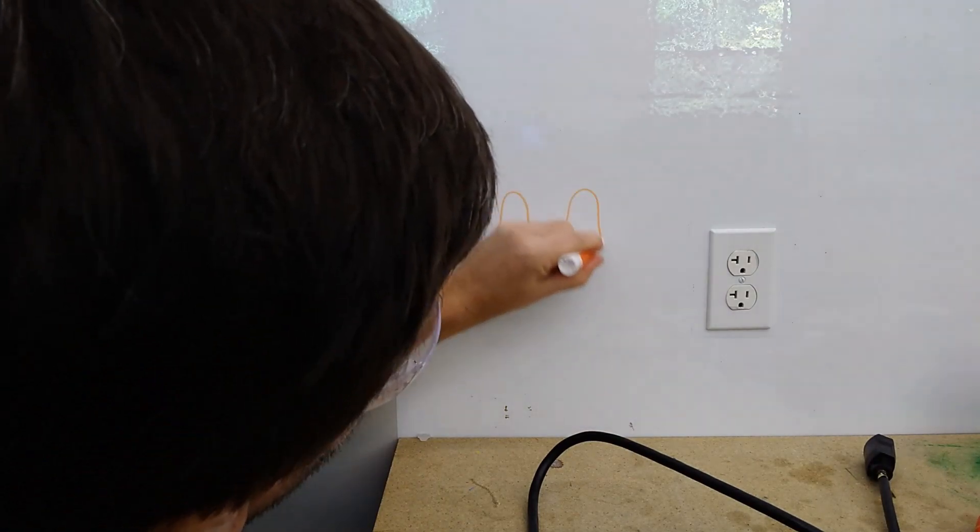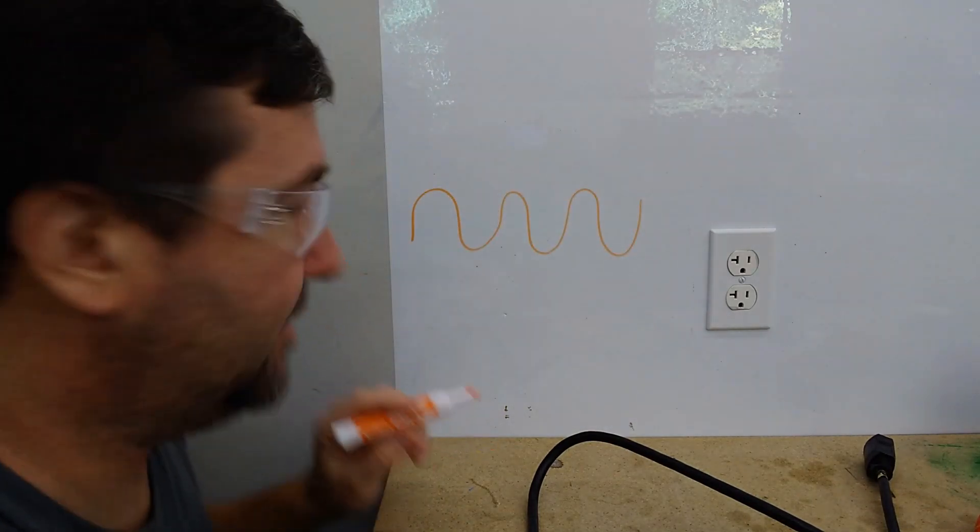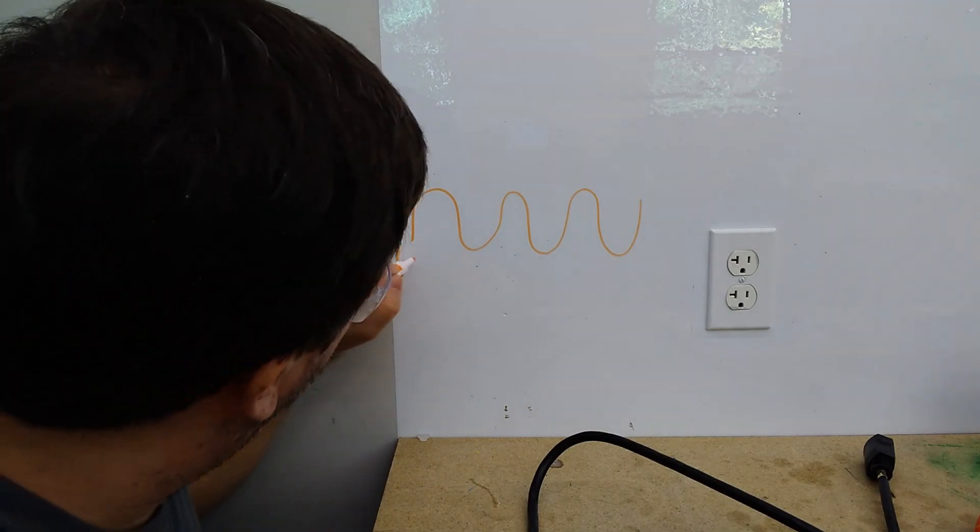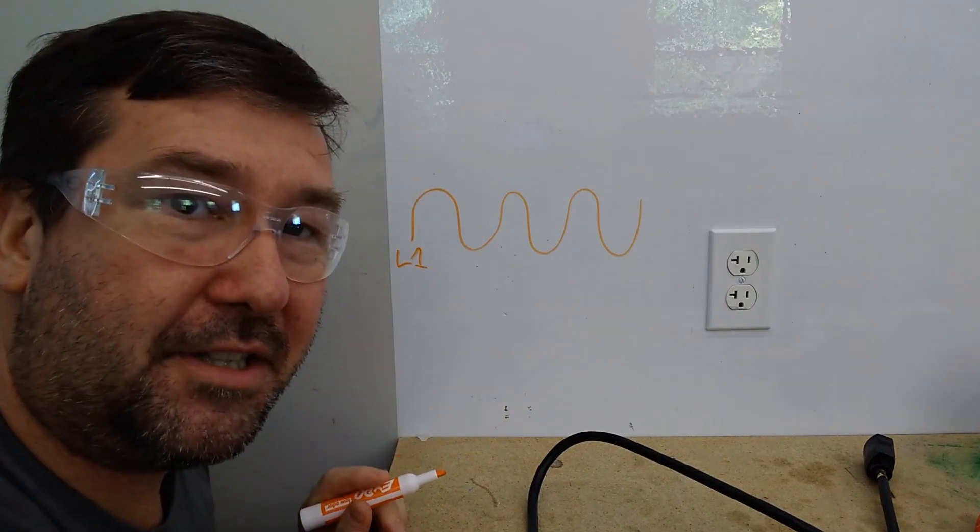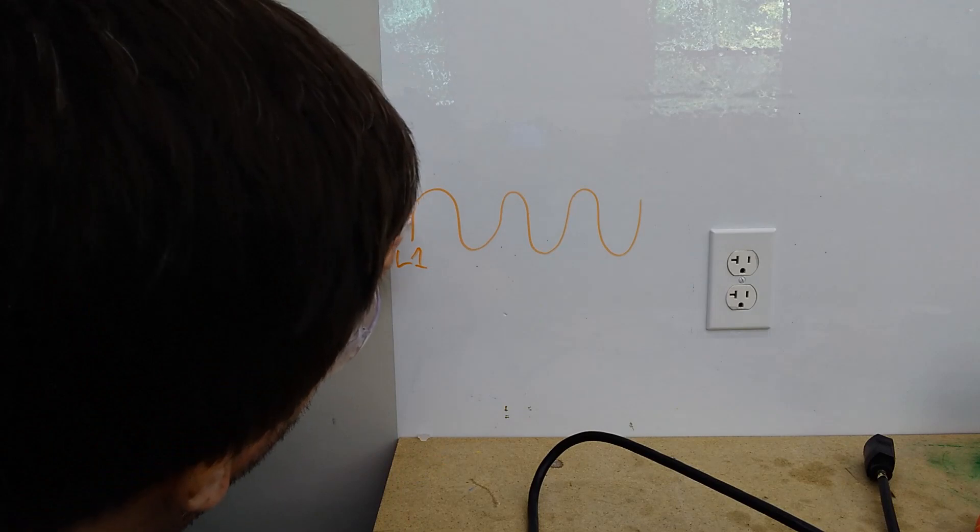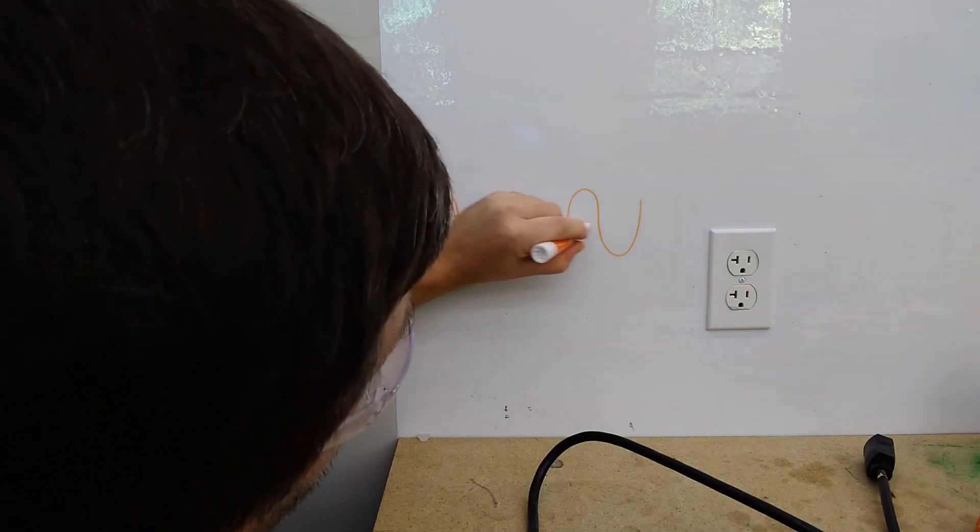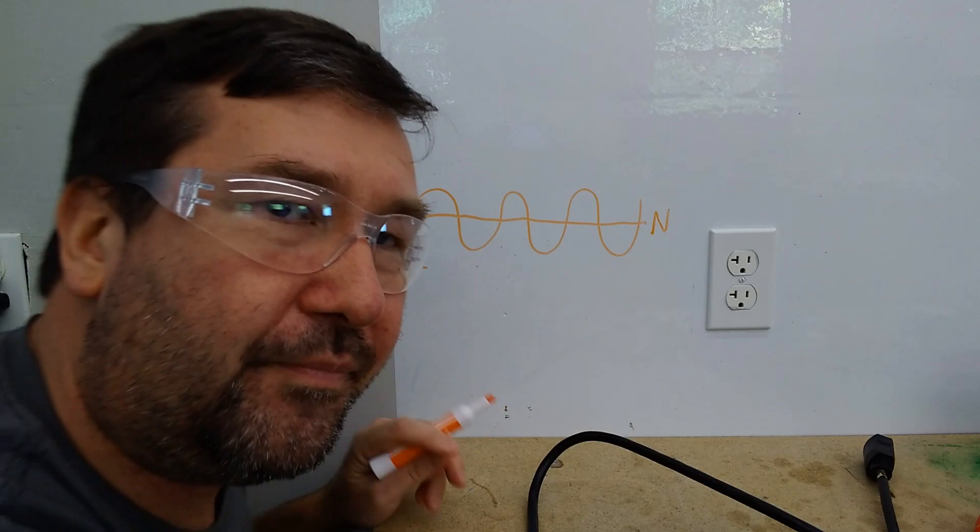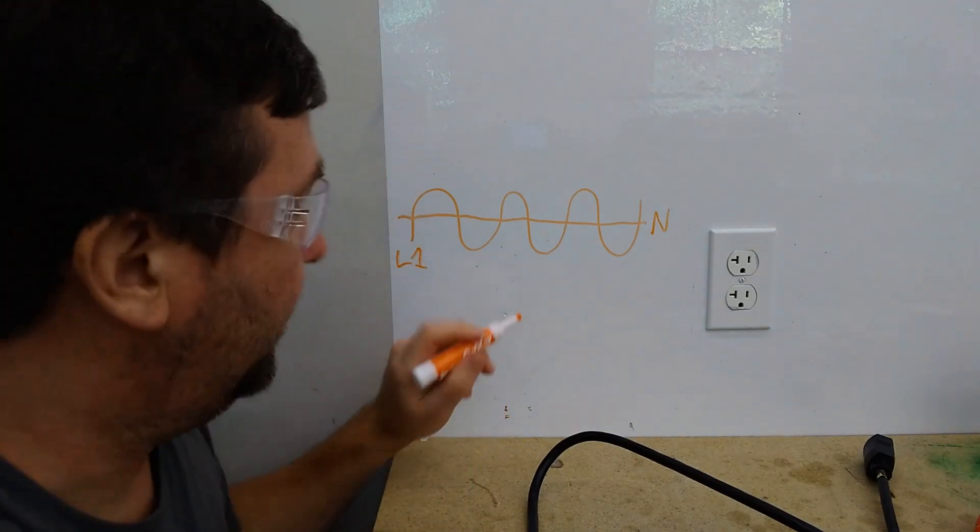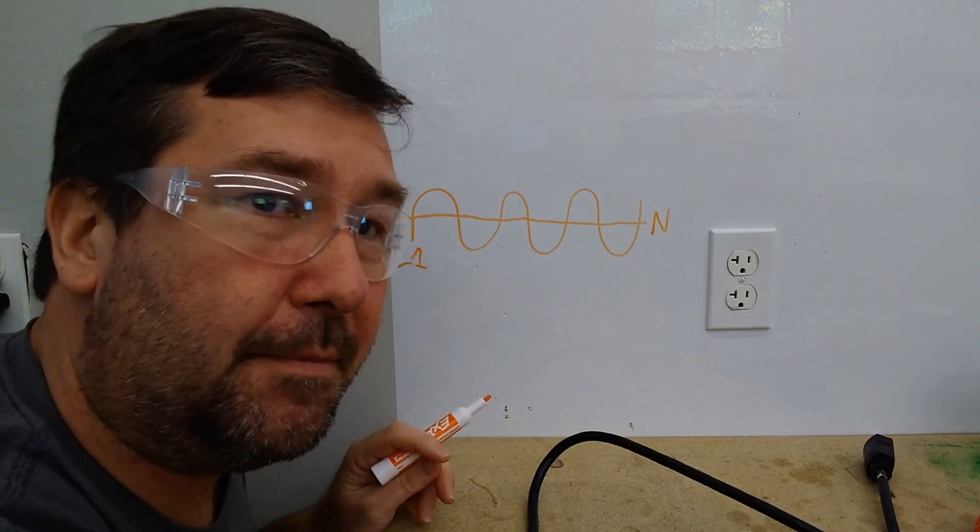So just to look at our typical power, we usually will notice that we have a sine wave something like that. And we know that the squiggly line is representative of L1. And we know that there's a middle line here that's represented of neutral.